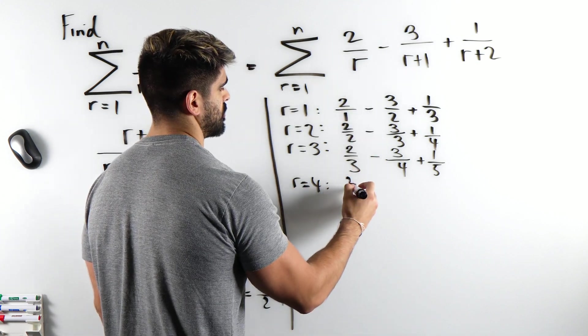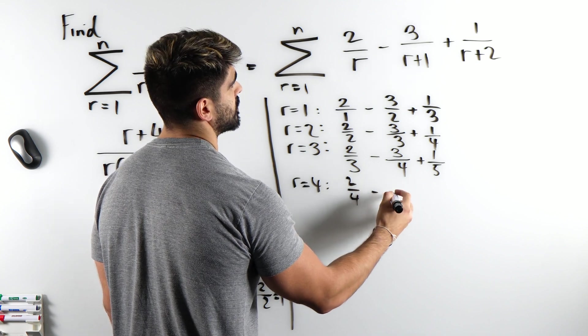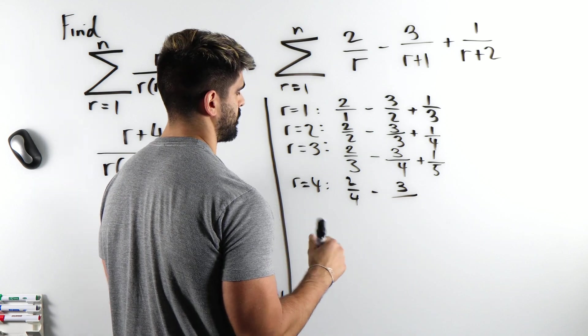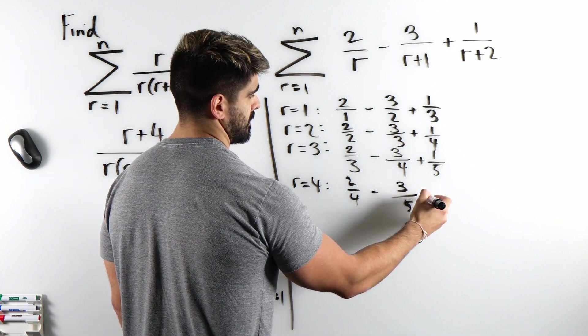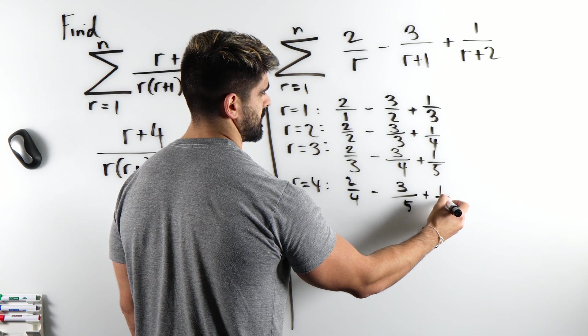So we have 2 quarters minus 3 over 4 plus 1 which is 5, plus 1 over 6.